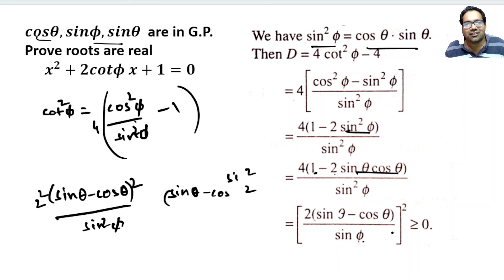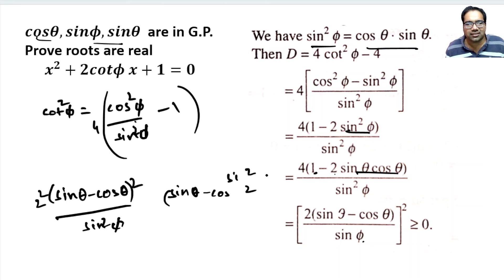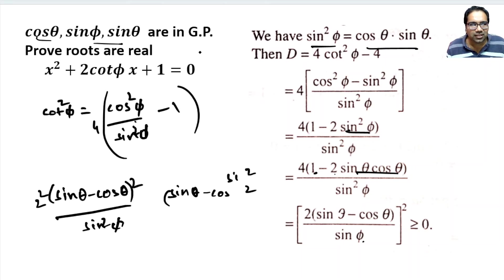Since it is a perfect square, this is always greater than or equal to 0. But this is our original discriminant b² - 4ac. We have now derived that b² - 4ac is greater than or equal to 0. That is why the roots are real.